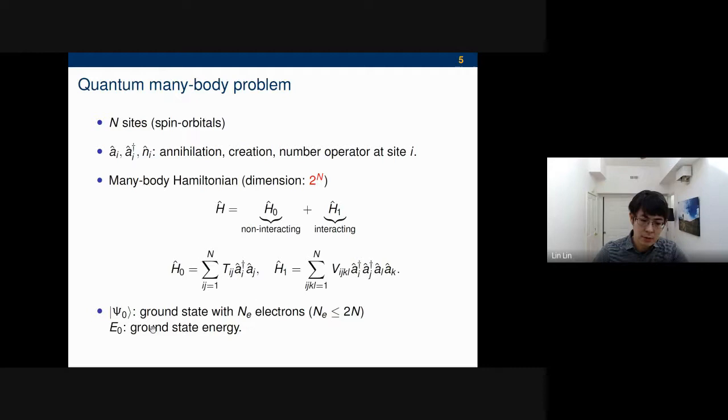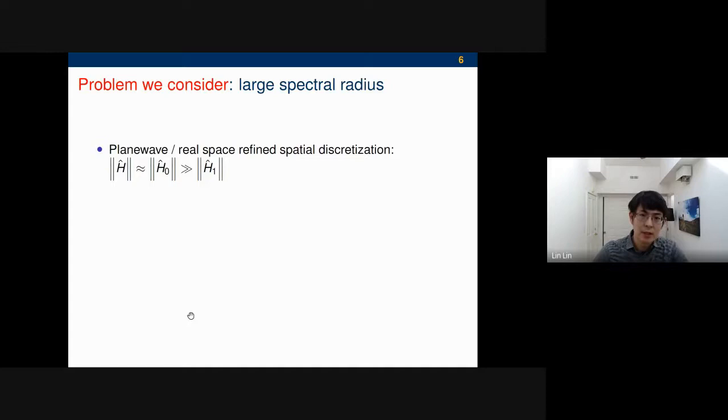The problem we consider in this talk is the problem of large spectral radius. In a number of scenarios, you can find that the spectral radius of H can be very large, and this can be very undesirable for almost everything we want to do on quantum computers. On classical computers, this is also annoying, but on quantum computers, this would be beyond annoying. The cost would be really large. For example, if you go to the plane wave, dual or real space, Gaussian discretization, and you keep refining and refining, the Laplacian operator is an unbounded operator. Eventually, the single particle part will become very large, which overshadows the two-electron interaction part.